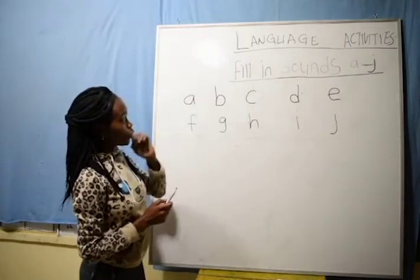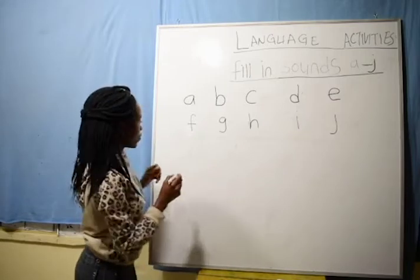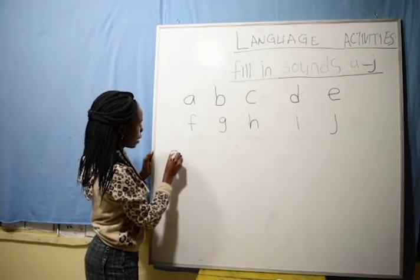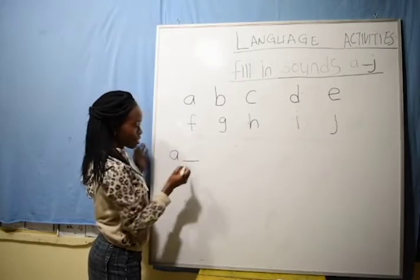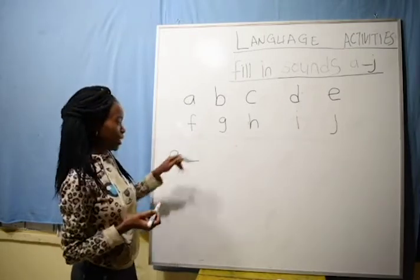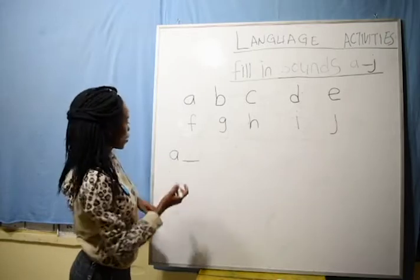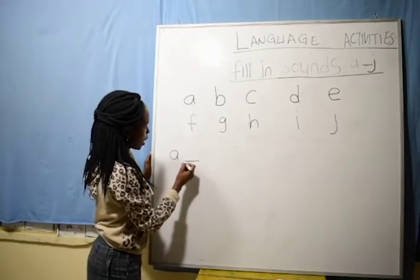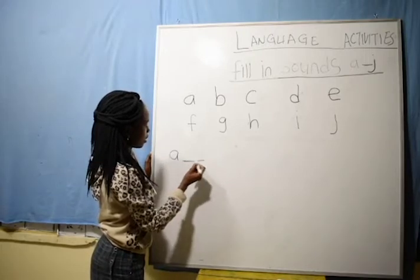So today we are going to fill in sounds. For example, I write sound A for apple, then a dash. This dash — I want you to fill it. Very good. So this one is A for apple. I put A dash there.